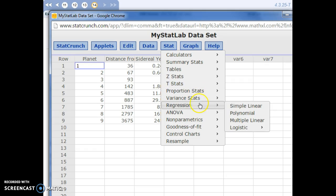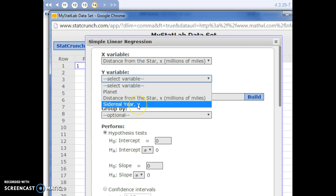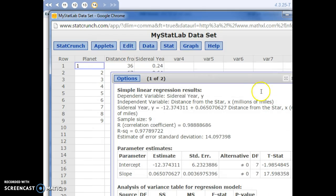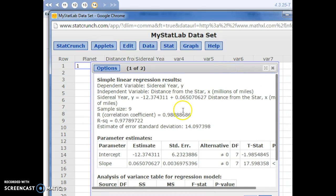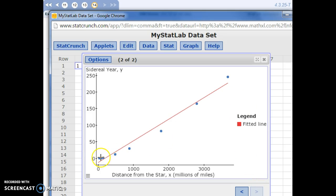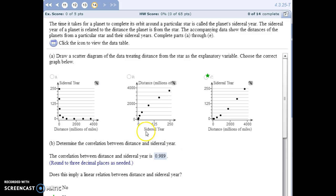So, for our planets, our numbered planets 1 through 9, we're going to do a regression, simple linear. So, our x value here is the distance from the star. Sidereal year is the y. Let's compute. So, we get our least squares regression equation. If we click the arrow at the bottom, we can see what the scatter plot would look like. And so, we pick the scatter diagram there for part A.